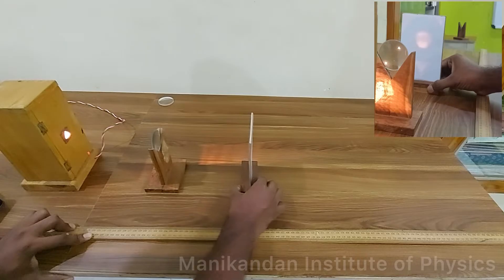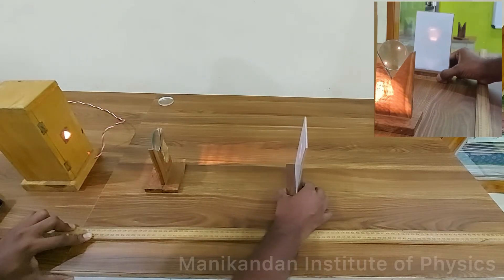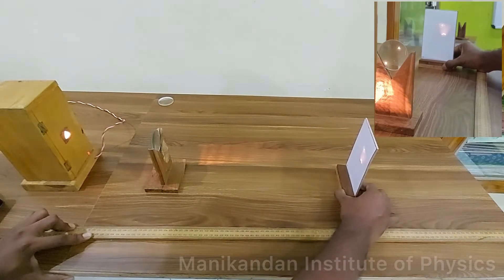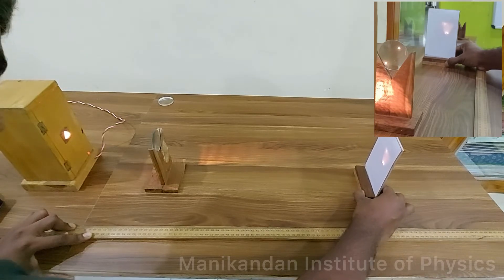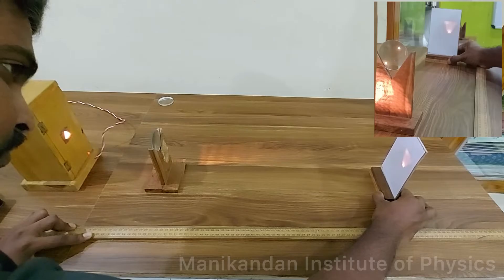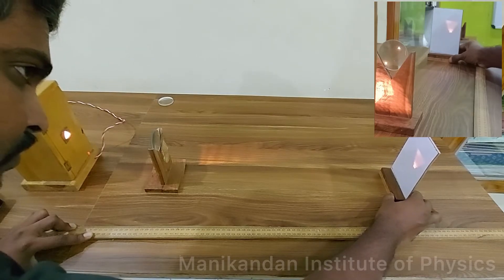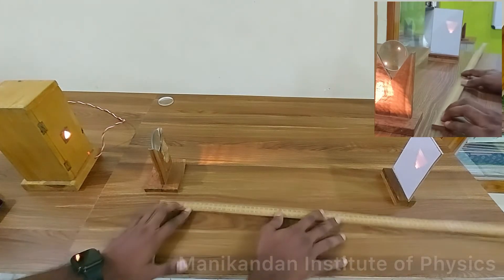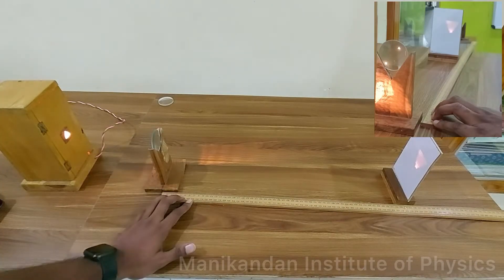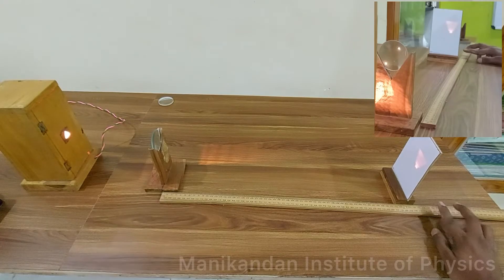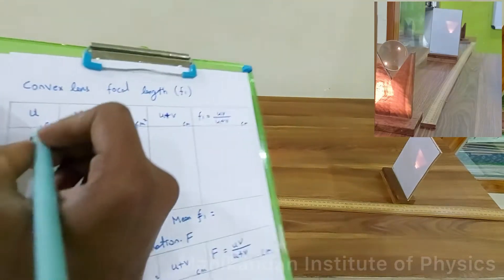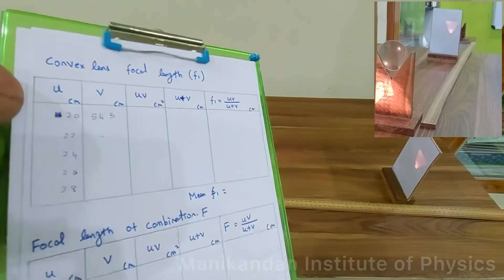I am moving the screen slowly away from the lens. The image formed on the lens is clear at this point. I am measuring the distance from the center of the lens to the screen — the distance is approximately 54.5 cm. So for u = 20 cm, my v is 54.5 cm.